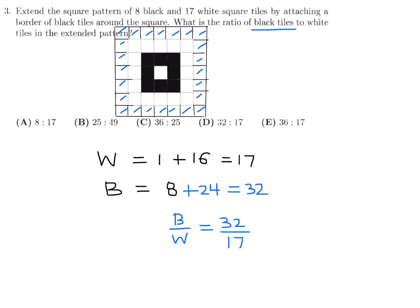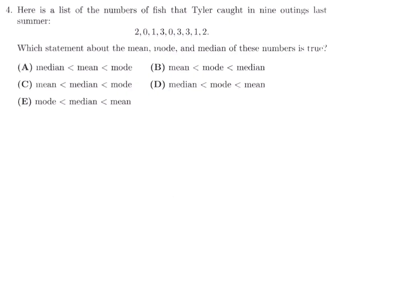Here is a list of numbers of fish that Tyler caught in nine outings last summer. What statement about mean, mode, and median of these numbers is true? So let's figure this out. Let's figure out the mean, the median, and the mode. And the mean of course is the average of those numbers. So if you add these numbers up and divide by nine, that will give you the mean. So it's 15 over nine when you add those numbers and divide by nine.